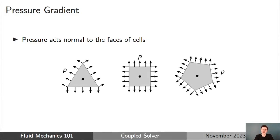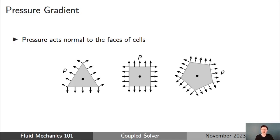In order to understand the coupled solver, we need to start by thinking about the pressure gradient. In CFD, pressure acts normal to the faces of all the cells in the mesh. I've got on the slide some examples of 2D cells, and you can see that pressure acts normal to the faces. If there's a difference in pressure between faces of the cell, there's going to be a pressure gradient across the cell, and that gradient exerts a force that appears in the momentum equations.